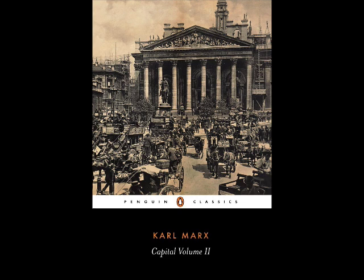It firstly makes commodity production universal and then gradually transforms all commodity production into capitalist production. Whatever the social form of production, workers and means of production always remain its factors. But if they are in a state of mutual separation, they are only potentially factors of production. For any production to take place, they must be connected. The particular form and mode in which this connection is affected is what distinguishes the various economic epochs of the social structure. In the present case, the separation of the free worker from his means of production is the given starting point, and we have seen how and under what conditions the two come to be united in the hands of the capitalist, i.e. as his capital in its productive mode of existence. The actual process which the personal and material elements of commodity formation enter into with each other, the process of production, therefore itself becomes a function of capital.